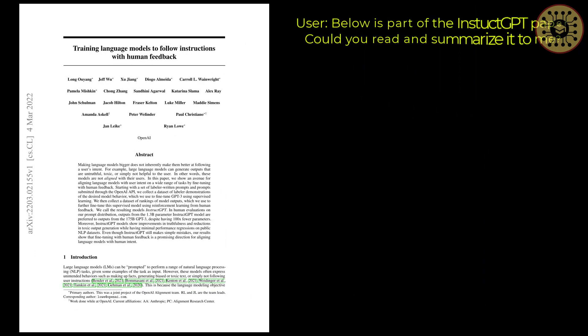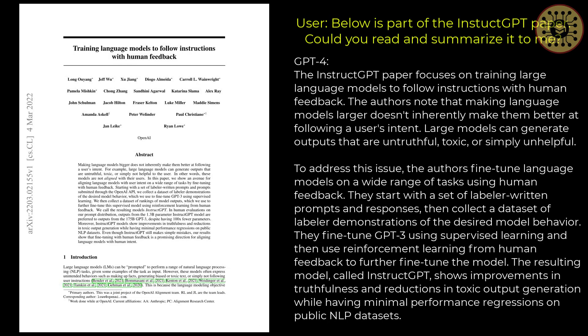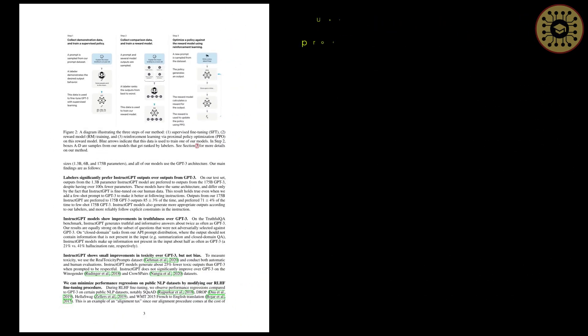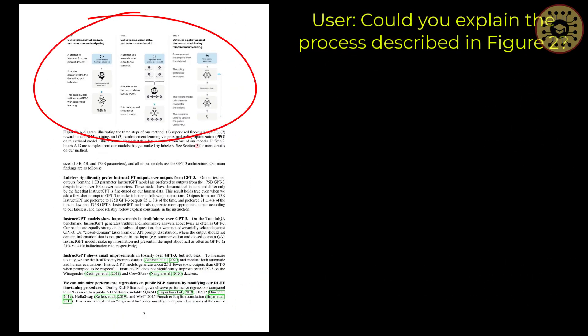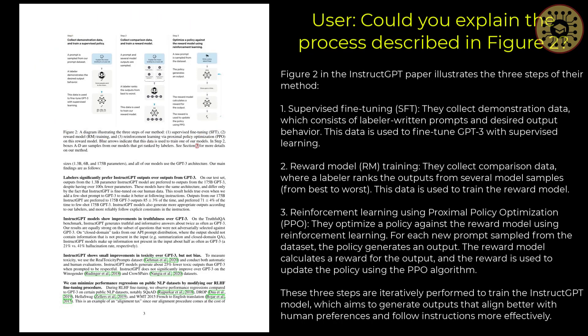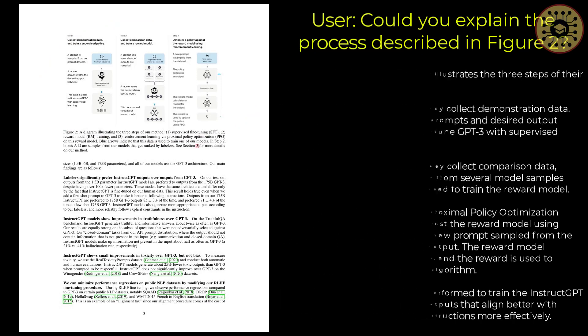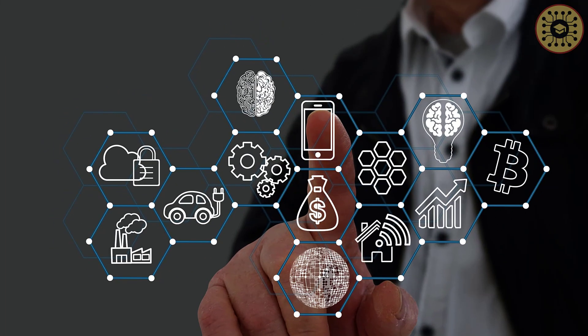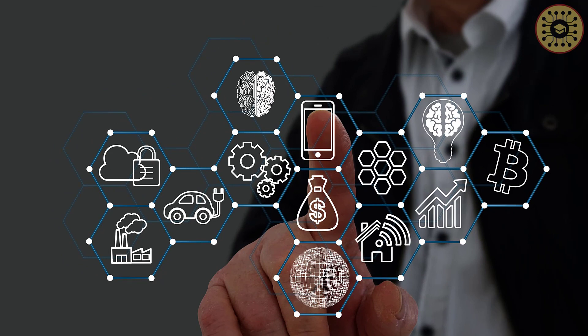In another example, when you give the model a few pages of an article and ask it to summarize, the model detects the text in the image and summarizes the article for you. If you say to explain the second table specifically, it also describes the table to you. If someone had said 5 years ago that AI would recognize objects in pictures and make inferences, no one would have believed it. But now, look at the level AI has reached in such a short time.